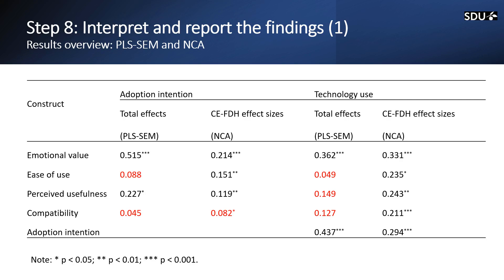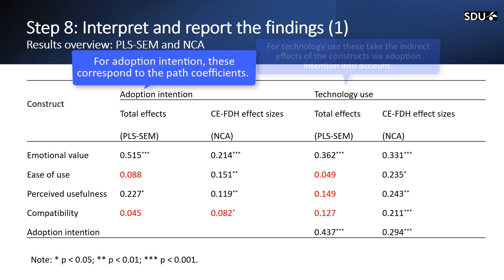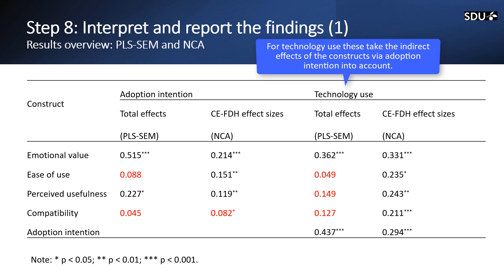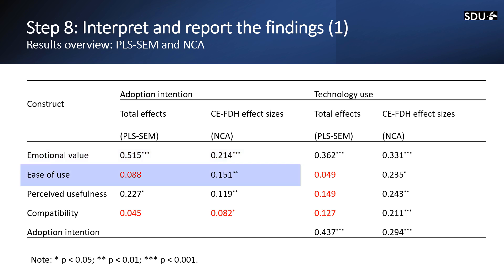Here we have two NCA analyses. In one, we use adoption intention as the outcome; in the other, we use technology use as the outcome. The emotional value is a significant determinant and also a necessary condition because the d value is larger than 0.1 and the p value is significant. The ease of use is a non-significant determinant, but it is a necessary condition because the d is larger than 0.1 and the p value is significant.